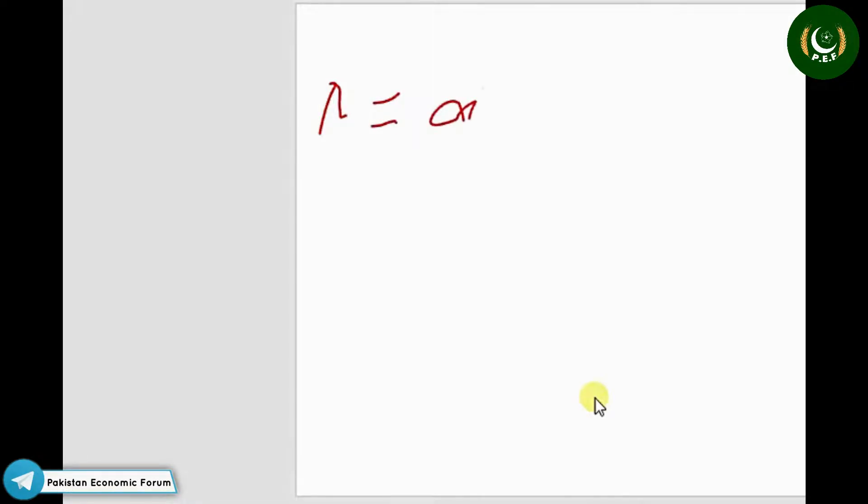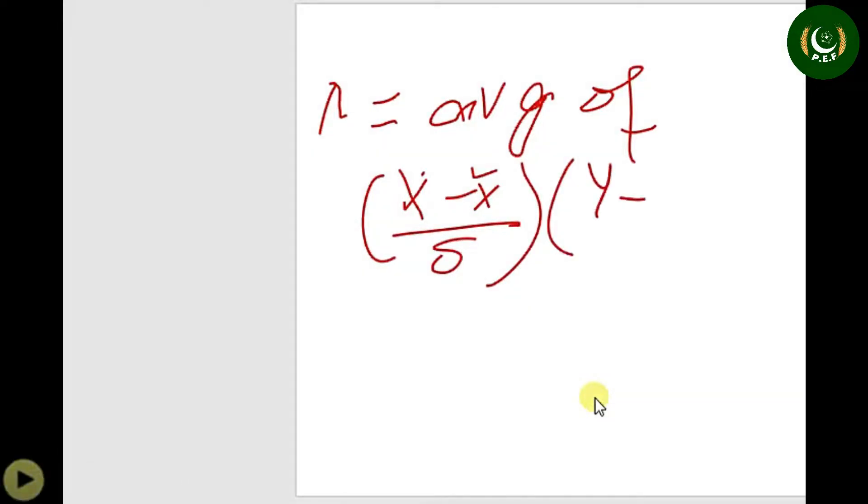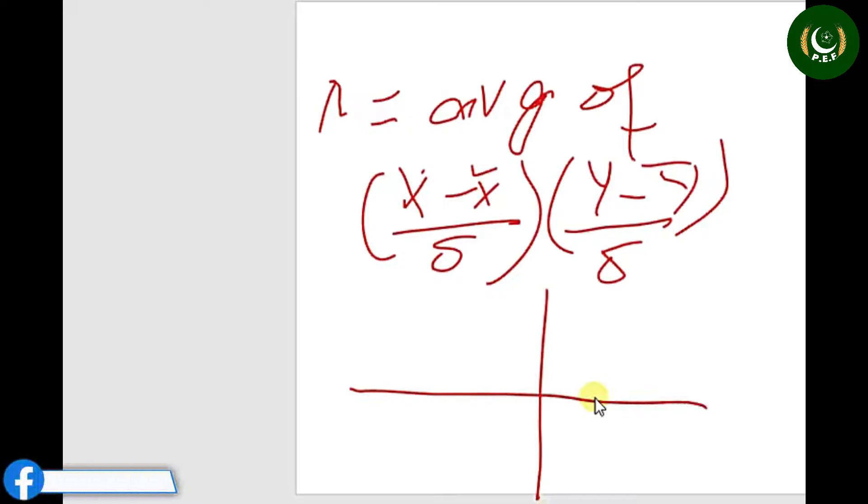Correlation is simply the average of standard units of x and y: average of (x minus x bar divided by sigma x) times (y minus y bar divided by sigma y). Our next objective is why correlation is positive or negative.